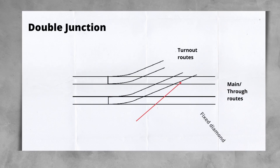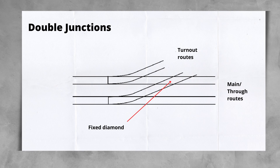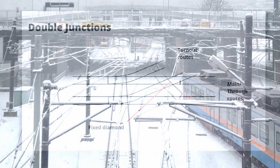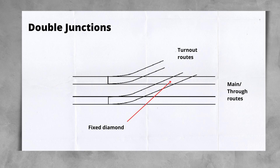One of the most common junction layouts is the double junction. This layout is two tracks diverging away from a two-track railway. It features two turnouts, whose toes are generally adjacent to each other, and what is called a fixed diamond. A fixed diamond allows one track — in this case a turnout — to cross the other. It's made up of four crossings. You'll come across diamonds in a number of different S&C layouts, wherever one track needs to cross another.